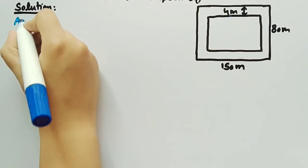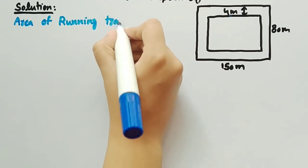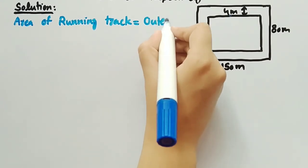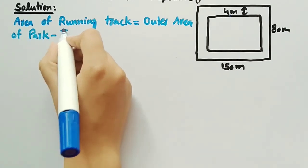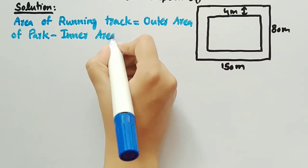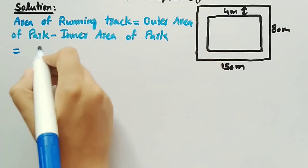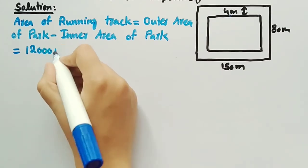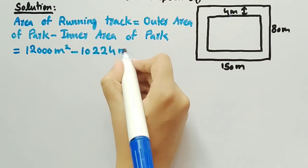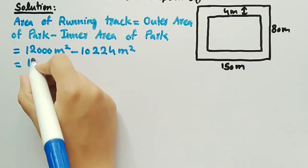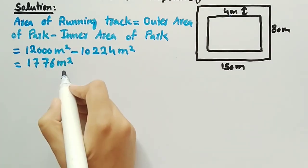Finally, we will find the area of the running track, which is equal to outer area of park minus inner area of park. That is 12,000 meter square minus 10,224 meter square. Subtracting these two we get 1,776 meter square. This is the area of the running track and this is the solution of the given question.